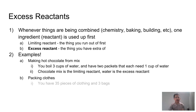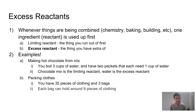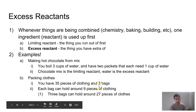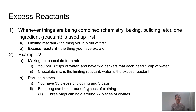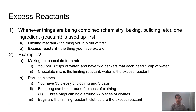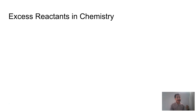Let's talk about another example. Let's say we're packing clothes — you've got 35 pieces of clothing all the same size and three bags that are all the same size, and each bag can only hold nine pieces of clothing. Which is going to be the excess reactant — bags or clothes? Well, three times nine tells us with our three bags we can hold 27 pieces of clothing. Once we pack 27 pieces, we'll be out of bags, but we'll still have eight pieces of clothing sitting around. Bags are limiting and clothes are in excess here.